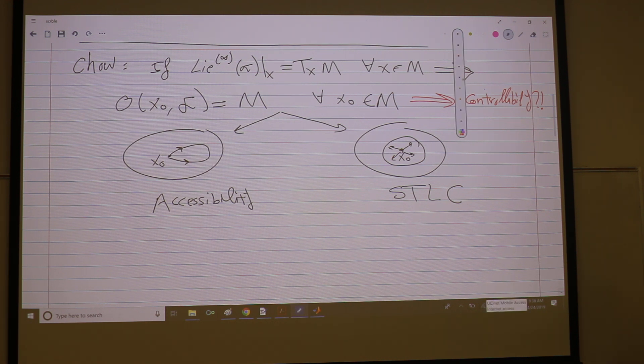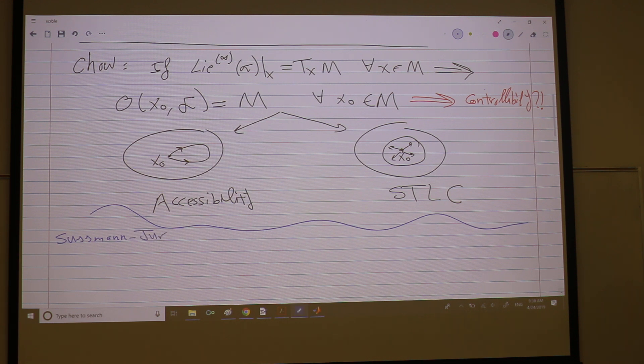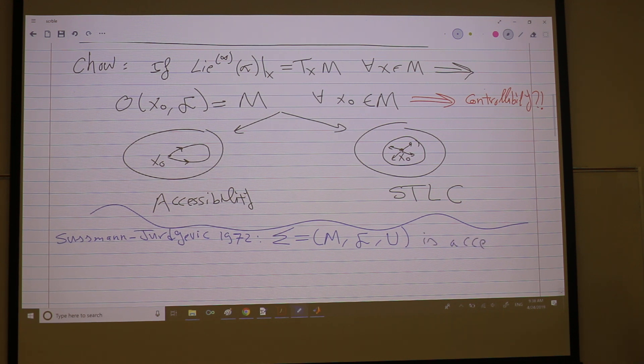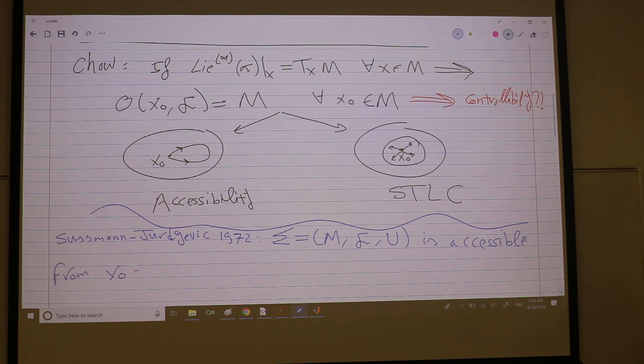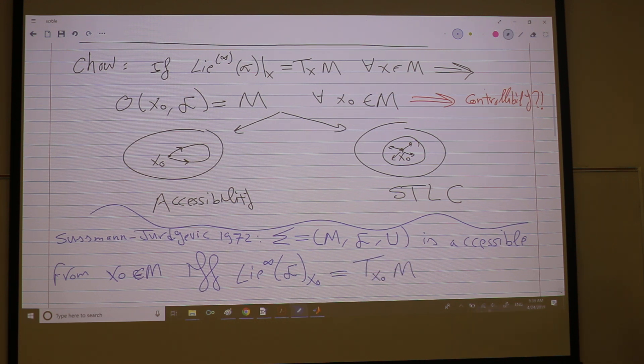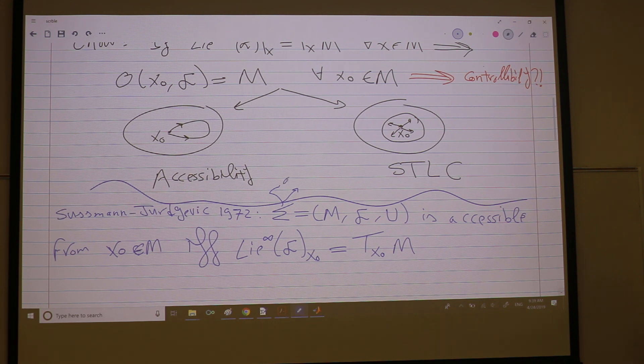So covering the entire tangent space does not ensure controllability yet. It might give us accessibility. So building upon all of that, we have the first theorem for accessibility, which is very expected now, by Sussman and Jurdjevic. It's the classical paper in geometric control theory, 1972. Sigma is just our manifold family of vector fields. A control affine system is accessible from x naught in M if and only if the infinity of this family at x naught is equal to Tx naught M. Talking about if and only if, so actually sigma must be Lie-determined. So this is regular C-infinity or analytic.